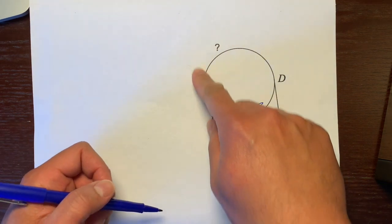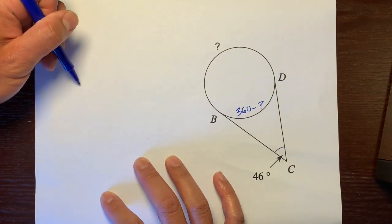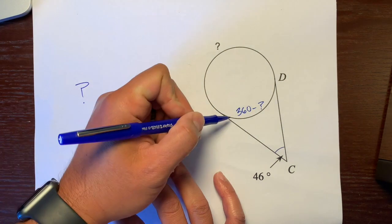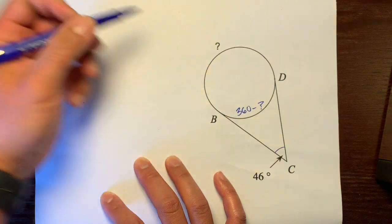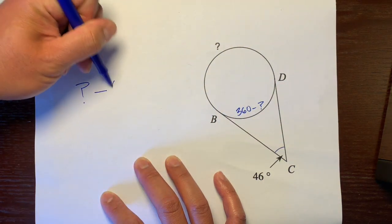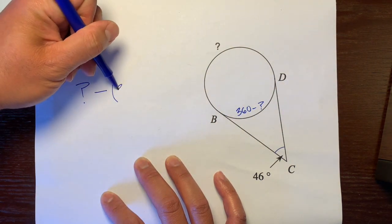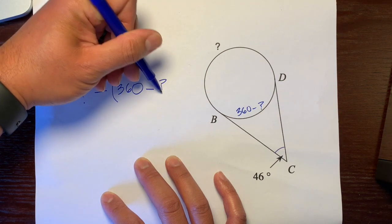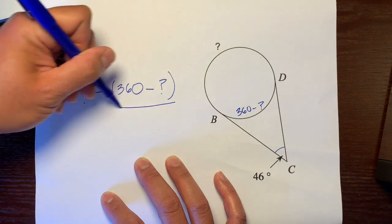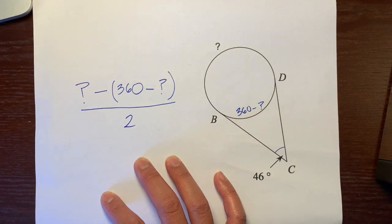We take the far arc, which is question mark, and subtract this arc, which is the difference of 360 and this arc. So we'll subtract, and I'll put a parenthesis, 360 minus the question mark, over 2, because that's the formula, which equals 46 degrees.